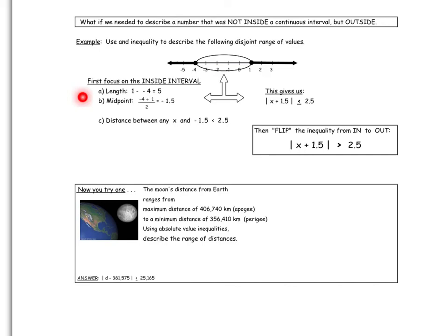Finding its midpoint, which is negative 1.5. So the distance between any x in the inner interval and negative 1.5, which is the midpoint, is less than 2.5 spaces, which is half of 5. 2.5, 2.5, a total of 5 from negative 1 and a half.